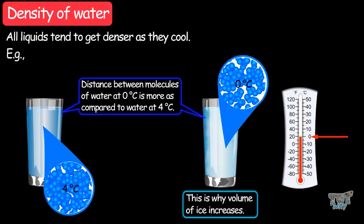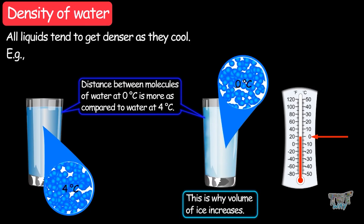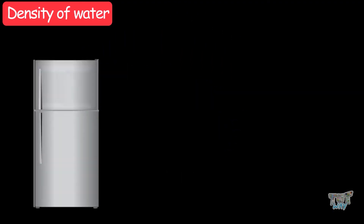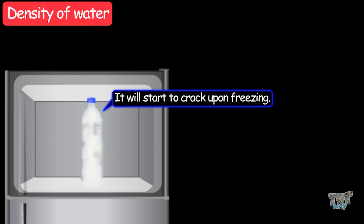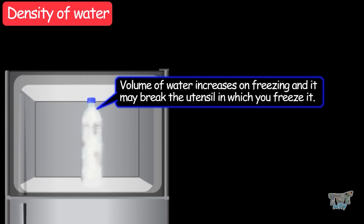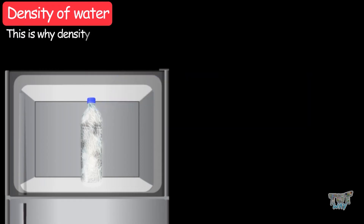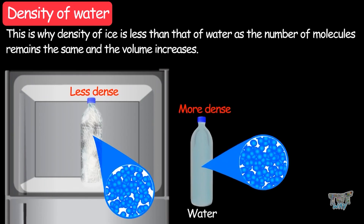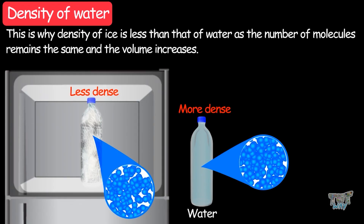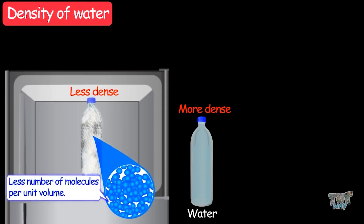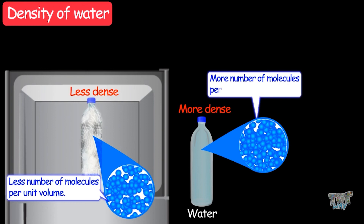This is why the volume of ice increases. If you keep a water bottle filled with water in your freezer, it will start to crack upon freezing, because the volume of water increases upon freezing and it may break the utensil in which you freeze it. This is why the density of ice is less than that of water, as the number of molecules remains the same and the volume increases. So ice is less dense than water, having fewer molecules per unit space than water at 4 degrees Celsius.